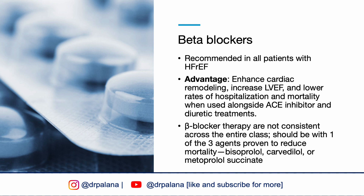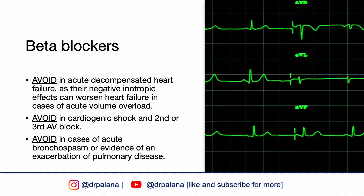The three proven beta blockers are bisoprolol, carvedilol, and metoprolol succinate. Bisoprolol is less commonly used in the U.S. Beta blockers should not be initiated during acute decompensated states, as their negative inotropic effects can worsen heart failure in acute volume overload. Contraindications also include cardiogenic shock and second- or third-degree AV block. For patients with reactive airways or COPD, beta blockers should be avoided in cases of acute bronchospasm or exacerbation of pulmonary disease.